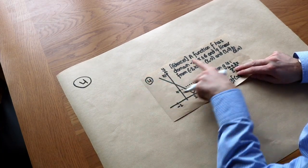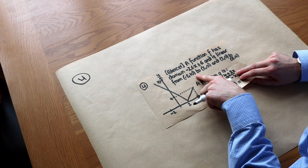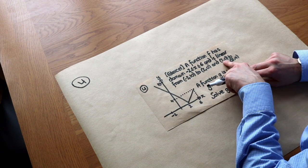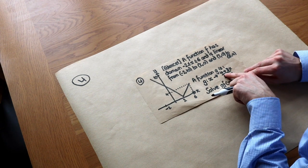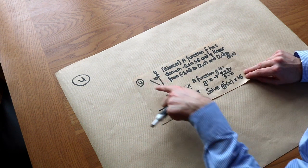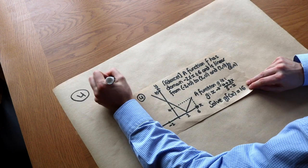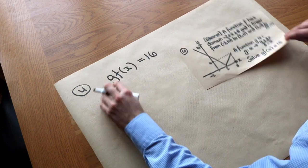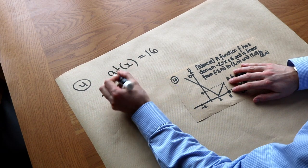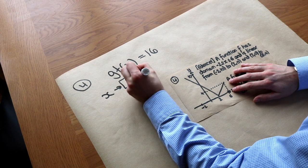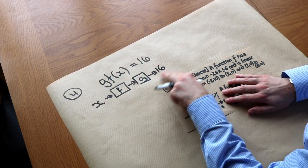Now for the final, more difficult question. A function f has the domain −2 to 6, and a function g is g(x) = (4 + 3x) / (5 − x). We need to solve g(f(x)) = 16. This is a composite function: some initial input x is fed through f first, then through g, giving 16. We need to work back to find x.